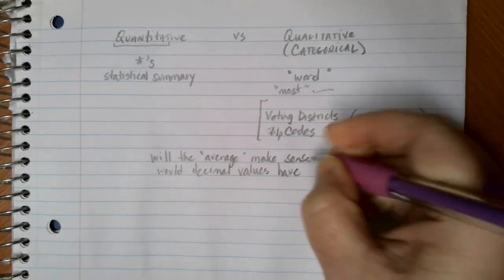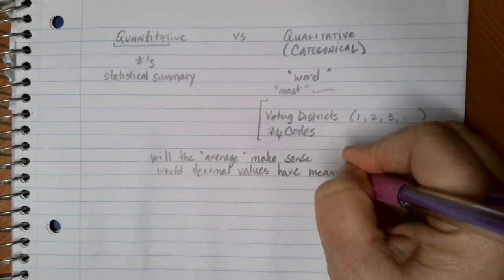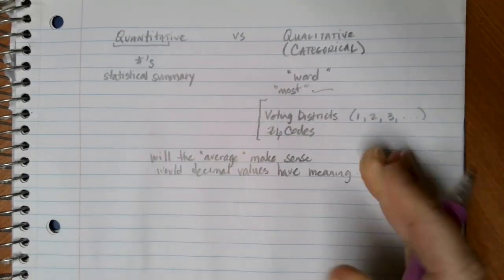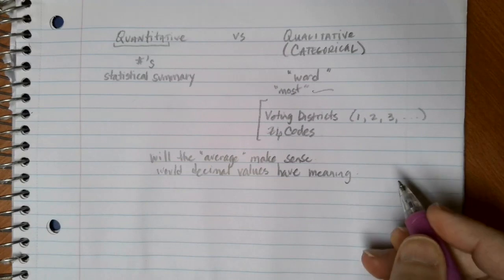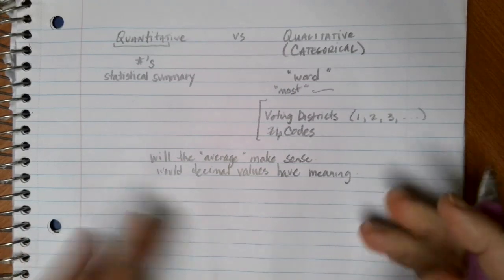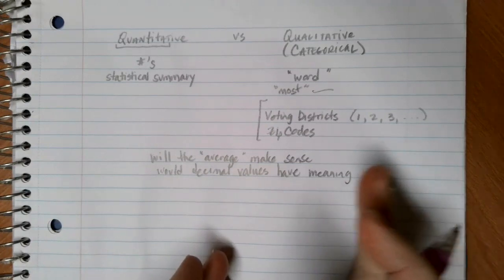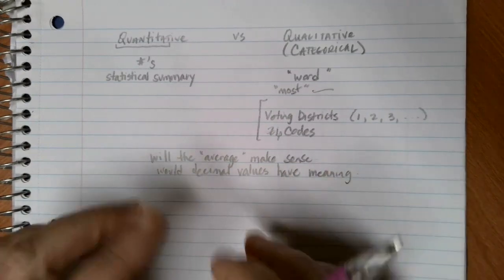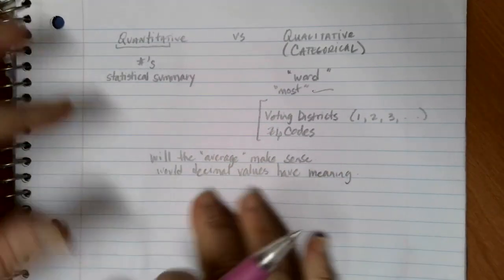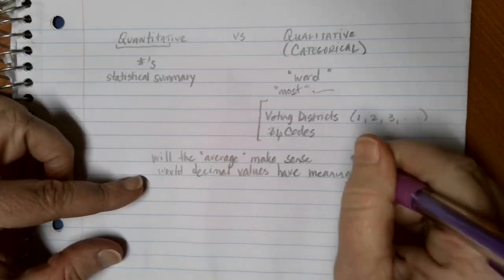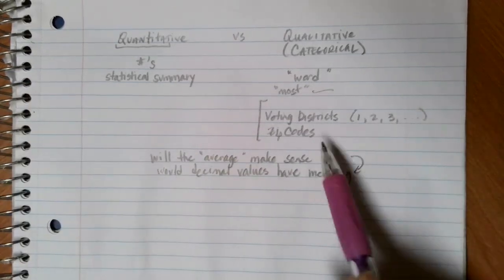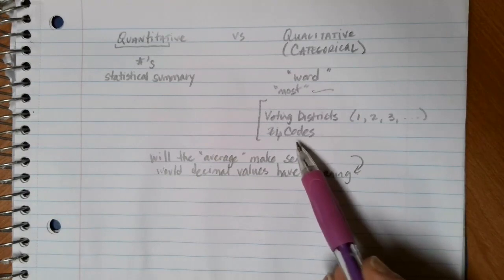So for example, if you're rating things on a scale of one to ten, you can average all of those values together and even if you get something like a 7.6 it's going to have some meaning. You're somewhere in between seven and eight and you've got a value there and you were able to take an average that has that meaningful kind of a result.